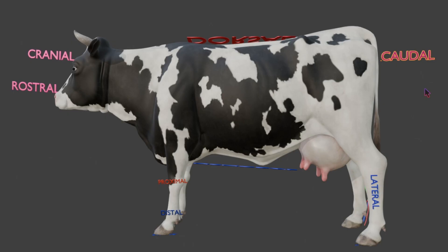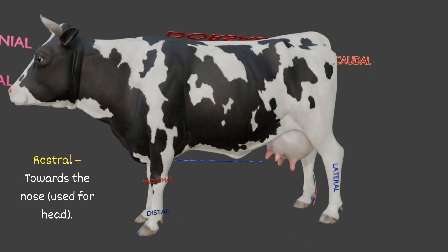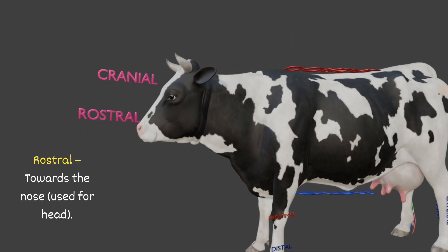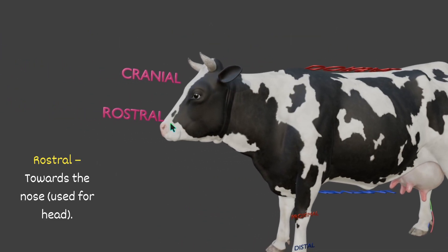One term we use is rostral, which means towards the nose. When we describe the head, we use the term rostral. You can see the nose of the animal here — so this is rostral. Rostral means towards the nose, and is used specifically when describing the head.